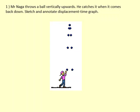If Mr. Naga throws a ball vertically upwards, he catches it when it comes back down. Sketch and annotate a displacement-time graph. When the ball leaves my hand, it needs to be going upwards quite fast — going upwards at a high velocity. This means that on the displacement-time graph we need to have a positive and steep gradient.